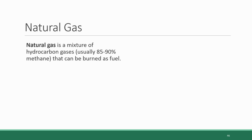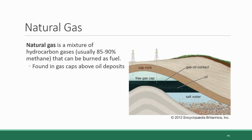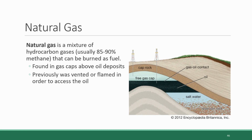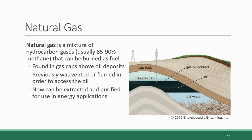As we learned in a previous section, natural gas is found in gas caps, which are pockets located above oil deposits. Natural gas used to be just vented or flared when drilling for oil, meaning it was released into the atmosphere or burned to get rid of it in the process of getting to the oil. But now it can be collected and purified for energy applications.